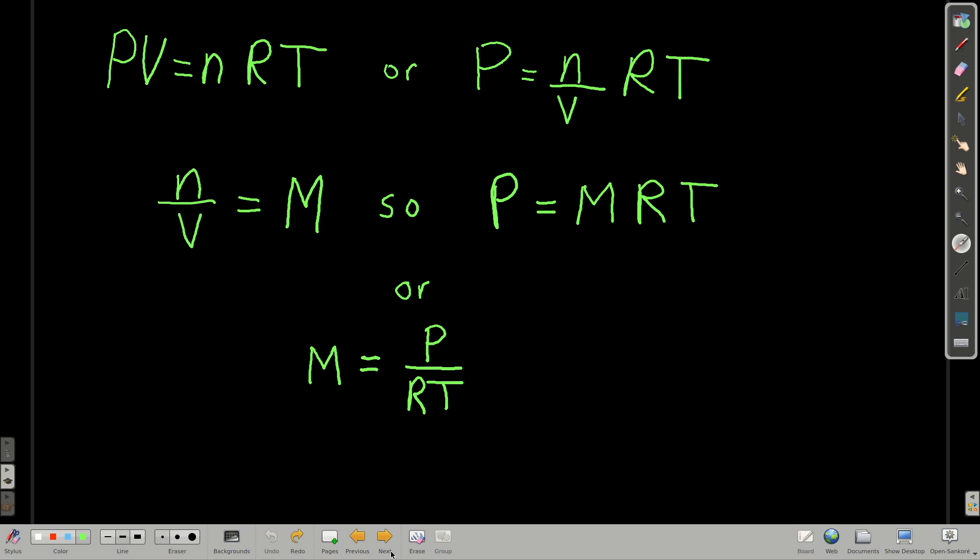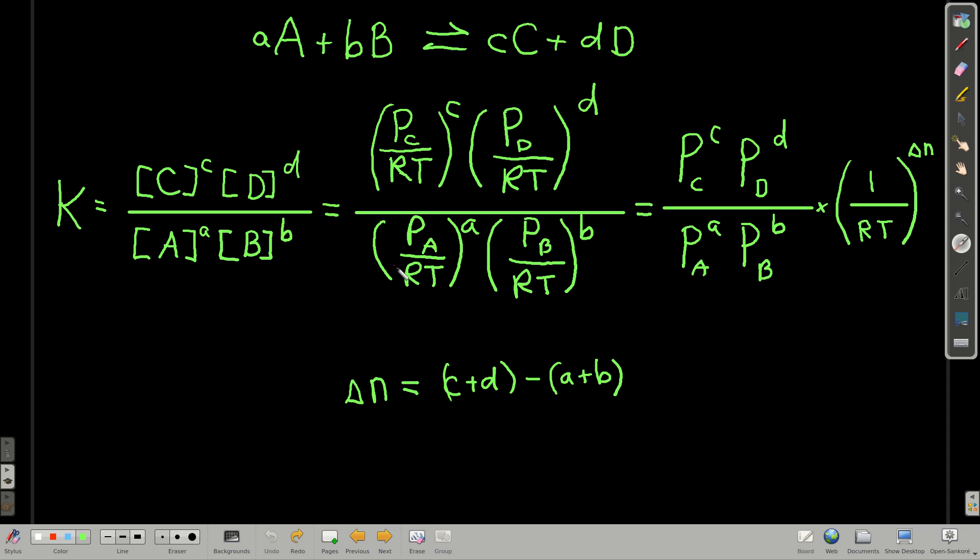Going back to our general equilibrium reaction, aA plus bB goes to cC plus dD, writing down the equilibrium expression. Sometimes we write this as a Kc, but most of the time we're just going to write it K, assuming that the C is there, or it's implied. C stands for concentrations. So there we have our equilibrium expression.